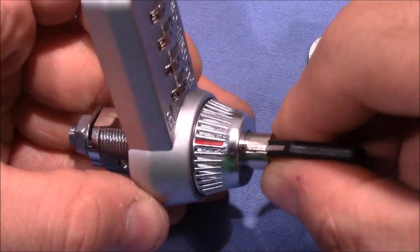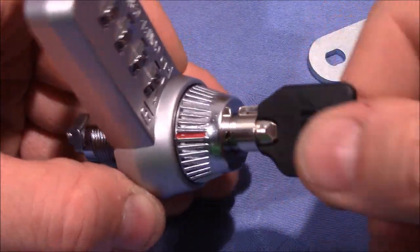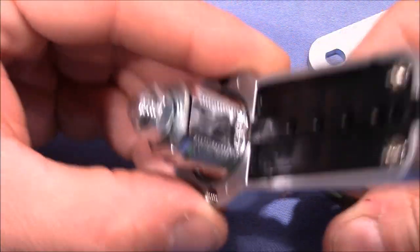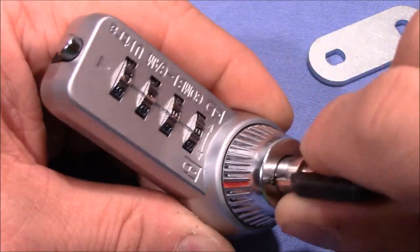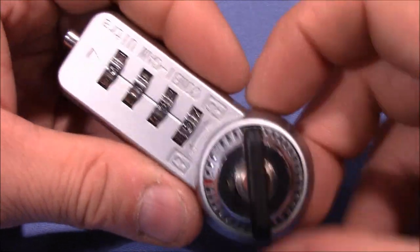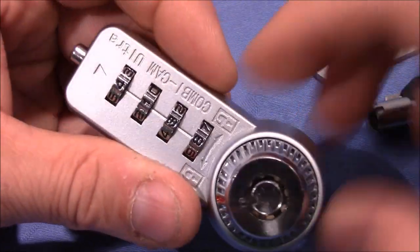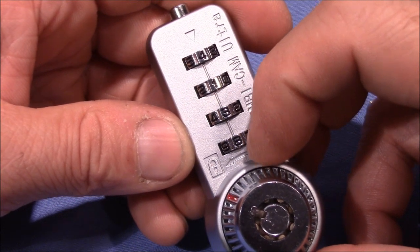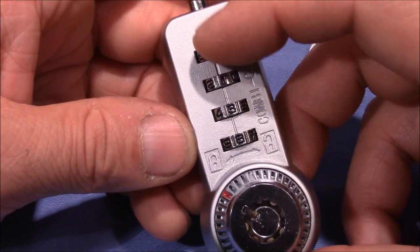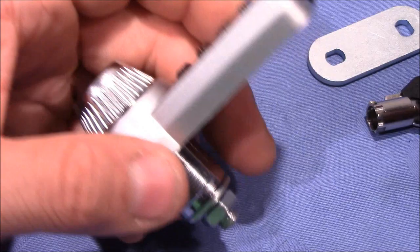Let's do this quickly. You can see I can turn the inner part. Now also the cam will turn, so this allows me to open up the drawer for example and then unmount the lock.